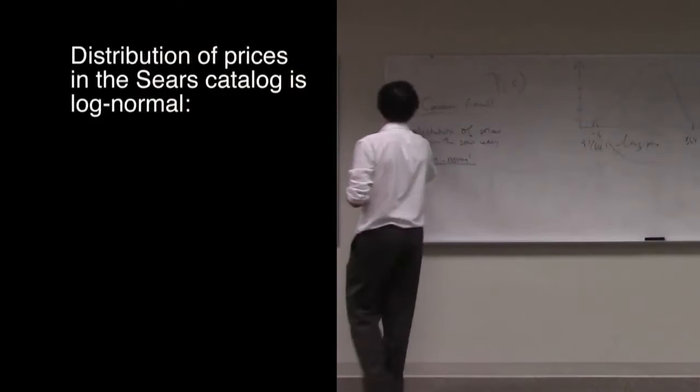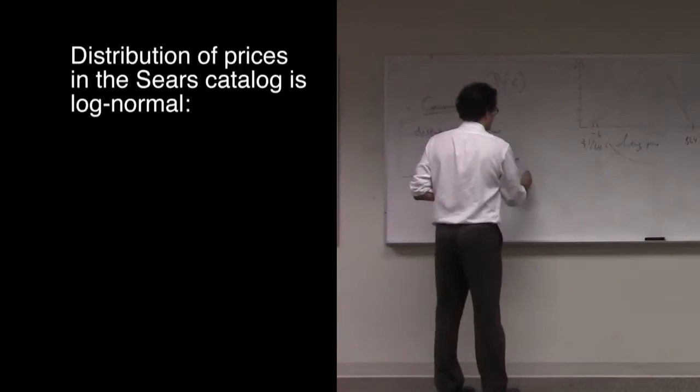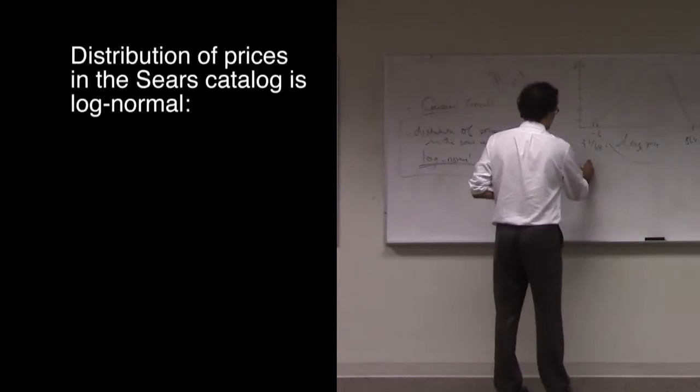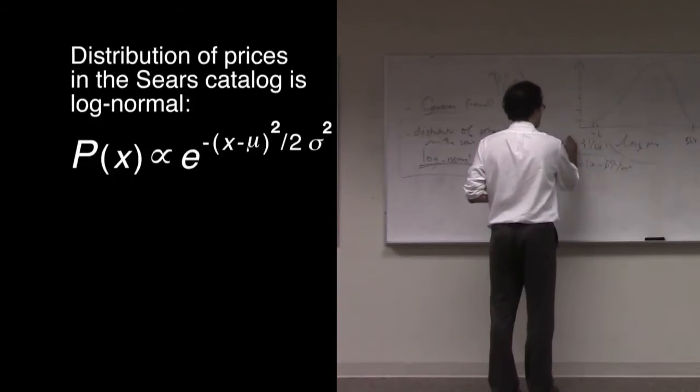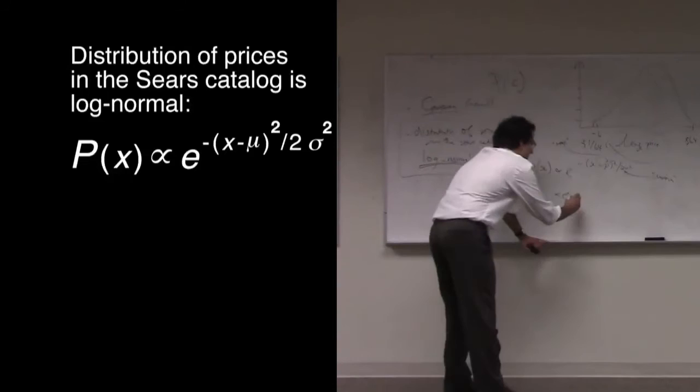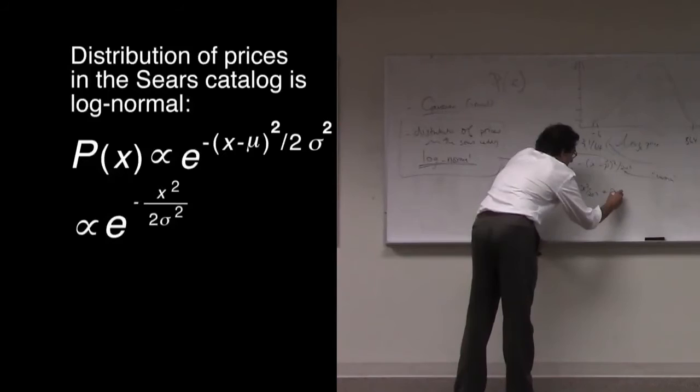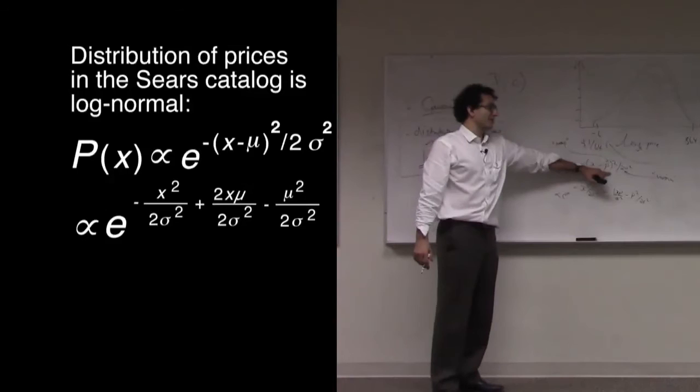So let's dig a little bit into the log normal distribution. It looks like P(x) is proportional to e^(-(x-μ)²/2σ²). I called μ x-bar there. But μ is the mean of the distribution. We call it the mean. And σ is something we call the variance. Let's expand this a little bit more. And we'll write this as e^(-x²/2σ² + 2xμ/2σ²) - that's the cross term - and minus μ²/2σ². All I've done is expand this (x-μ)²/2σ² term.